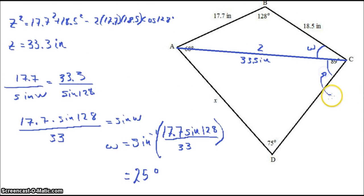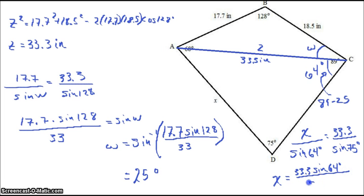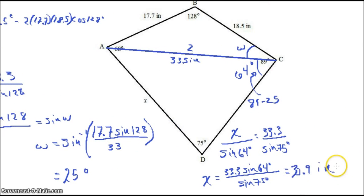And then, of course, this angle right here would be 89 minus 25, which I think is 64. And now, we can say x over sine of 64 equals 33.3 over sine of 75. And we'll find x is 33.3, sine of 64 over sine of 75 is about 30.9 inches.